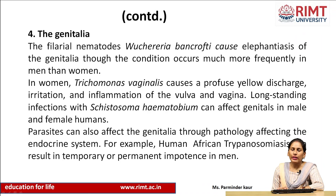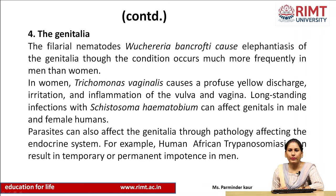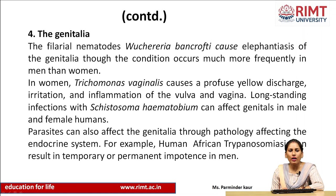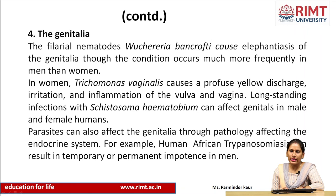The genitalia — affected by Wuchereria bancrofti, which causes elephantiasis, meaning the organs swell to resemble those of an elephant. Elephantiasis of the genitalia occurs much more frequently in men than in women. In women, Trichomonas vaginalis causes a profuse yellow discharge and irritation and inflammation of the vulva and vagina. Long-standing infection with Schistosoma can also affect the genitals in both male and female. Parasites can also affect the genitalia through pathology affecting the endocrine system — for example, African trypanosomiasis can result in temporary or permanent impotence in men.